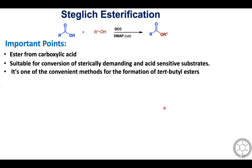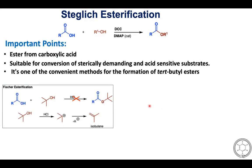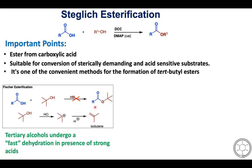Another important point is it is one of the most convenient methods for the preparation of tertiary butyl esters. In Fischer esterification, the preparation of tertiary butyl esters is not simple because tertiary butanol under strong acidic conditions readily generates the corresponding carbocation — the tertiary butyl carbocation — which undergoes elimination to generate alkene compounds. For that reason, tertiary butyl esters cannot be prepared by Fischer esterification, but with Steglitz esterification we can prepare tertiary butyl esters too.